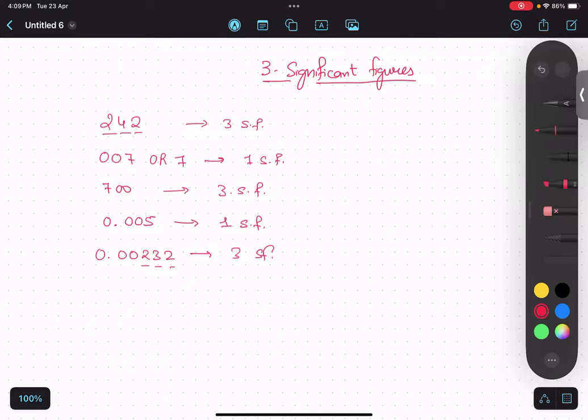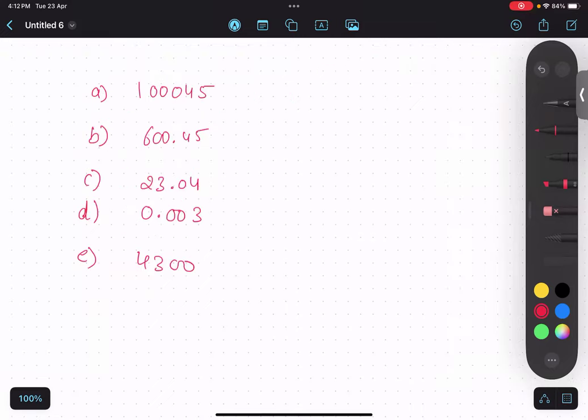So let me just give you some questions. Now, there could be some questions where we have to convert it into three significant figures. Write down these examples first of all. Quickly tell me the significant figures of these.